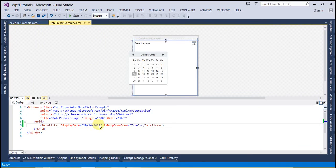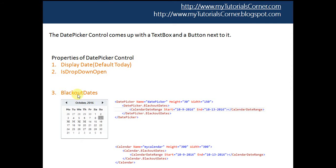The next property is BlackoutDates. I strongly recommend you watch part 18 to learn about BlackoutDates — I have discussed a lot about it there. The only difference between the DatePicker control and the Calendar control's BlackoutDates is that we have to use DatePicker instead of Calendar. The rest is the same — you can specify a collection of date ranges here, similarly to the Calendar control.